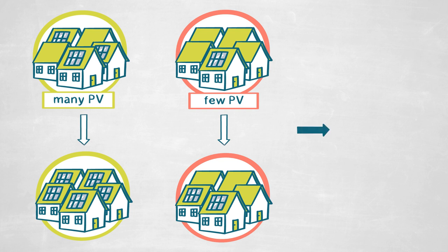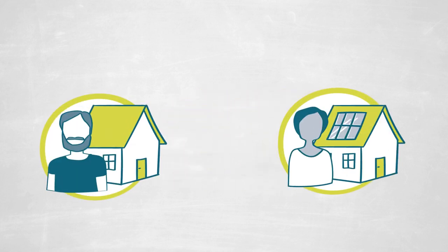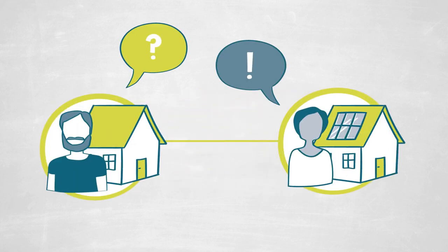That points to something called the peer effect. A peer, depending on the question at hand, is here considered a neighbor with an already existing PV system. Because of uncertainty — you don't know exactly how much your PV system may pay off, since you don't know exactly the amount of solar radiation producing energy — your neighbor who has already invested in a PV system may reduce that uncertainty by giving you information about their payoff. This effect of information spillover is called the peer effect.